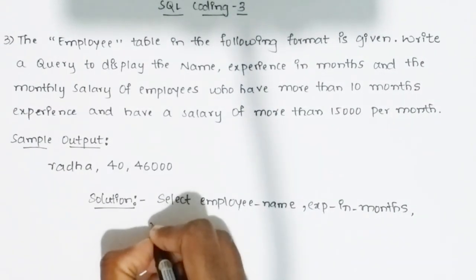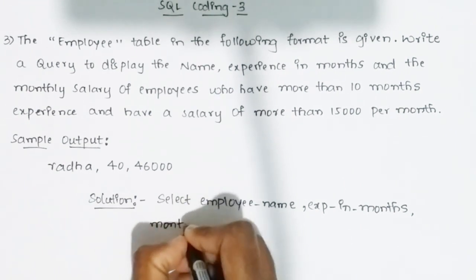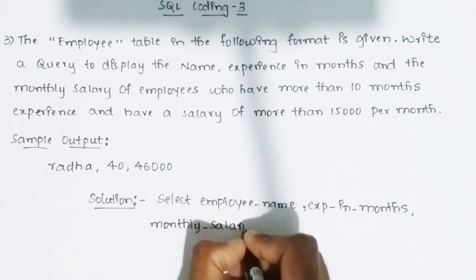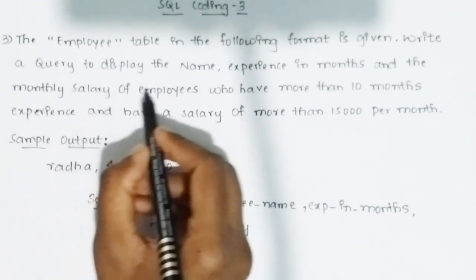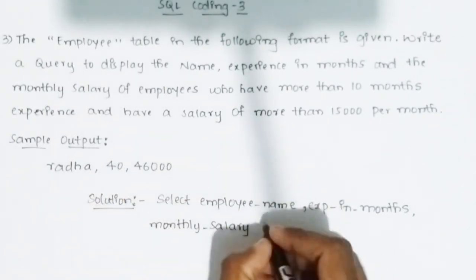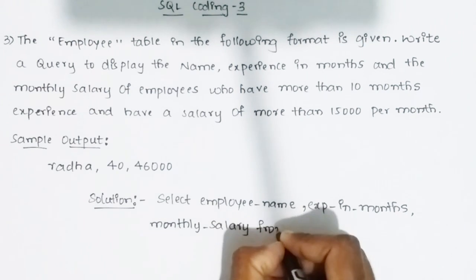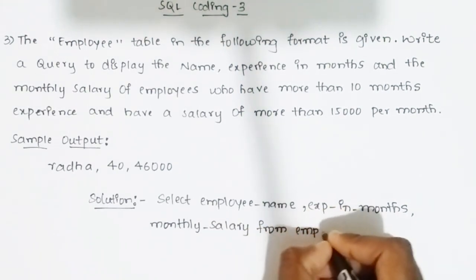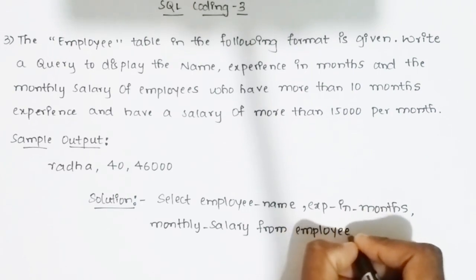After experience_in_months, add a comma and then monthly_salary. So the SELECT clause reads: SELECT employee_name, experience_in_months, monthly_salary FROM employee.